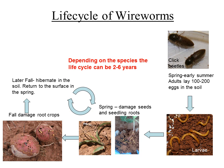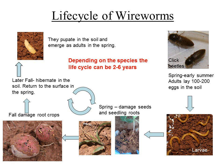In Ontario there are 172 species of click beetles, but not all of them are pests — just a few are. Limonius californicus is one of the species that is a pest, and there are some others that are also pest species. It's very important to know what species you have in your field.